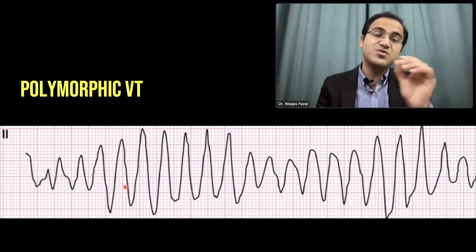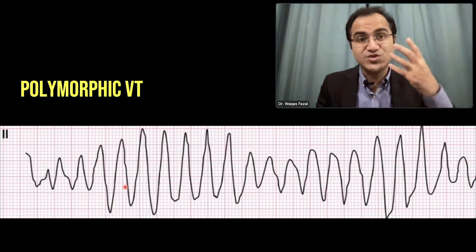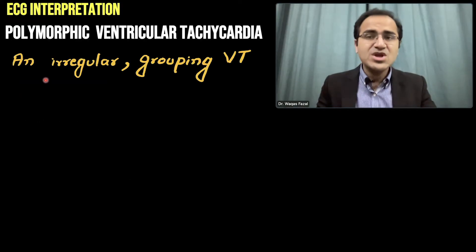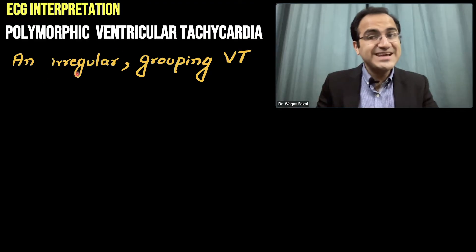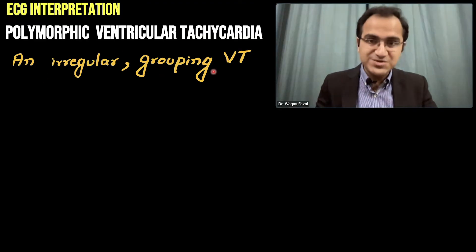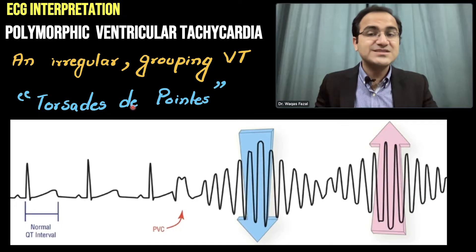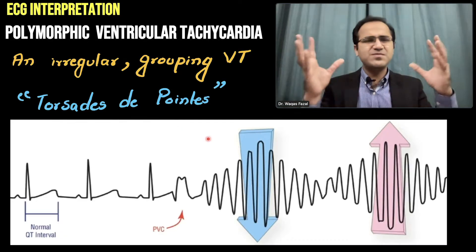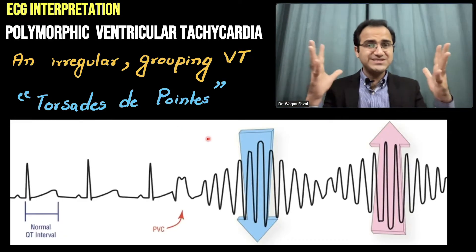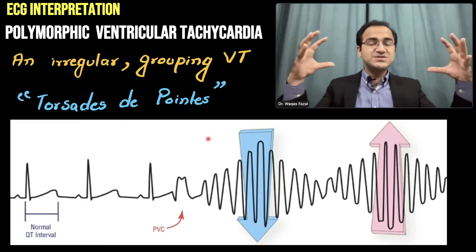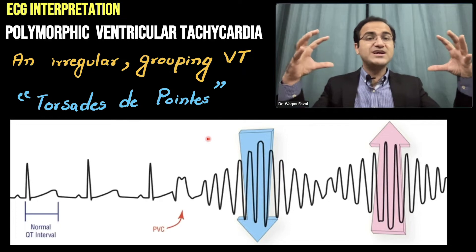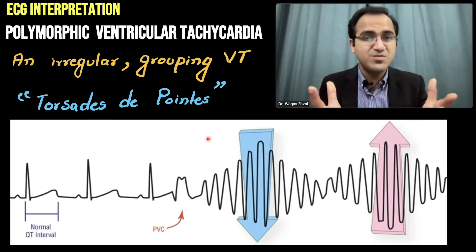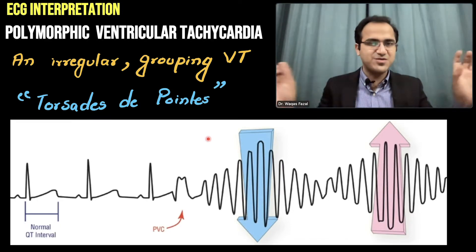Torsades de pointes is a type of polymorphic ventricular tachycardia — in fact, the most famous type. Polymorphic ventricular tachycardia is basically an irregular grouping of ventricular tachycardia. In torsades de pointes, multiple foci in the ventricles produce these electrical currents, and they join together to form a polymorphic ventricular tachycardia with different morphologies.